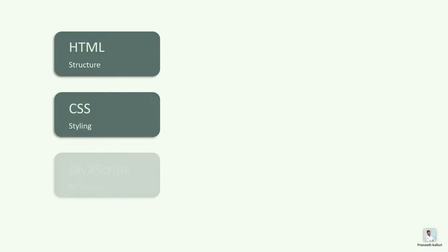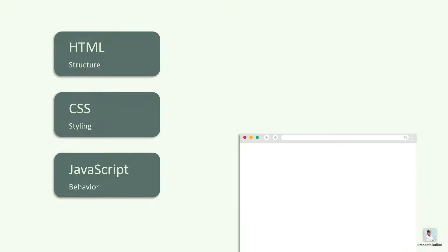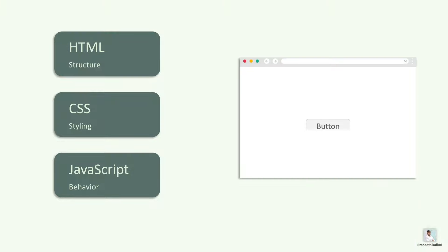HTML, CSS, and JavaScript are the languages that every frontend developer should learn. Let us look at them individually. HTML will give structure to a website by providing building blocks like buttons. CSS will style the website with colors and layouts. JavaScript is used to define the behavior of website elements by making them more interactive.